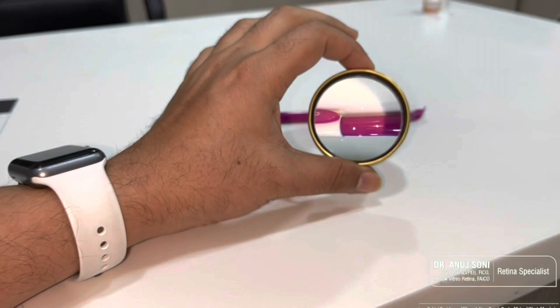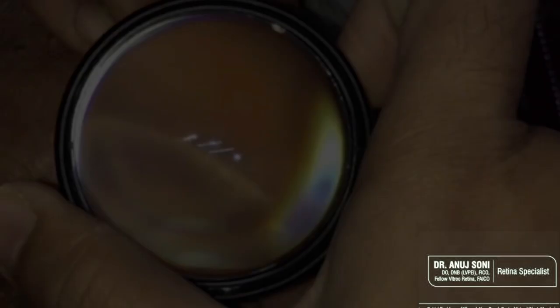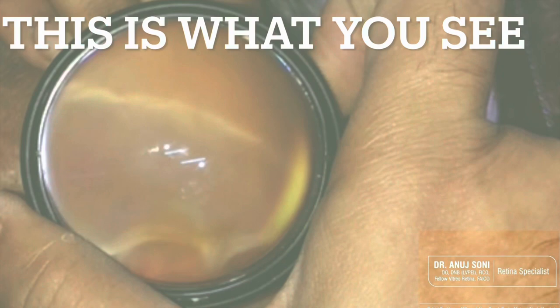We will put this into practice and understand what happens if we see the superior periphery. When the patient looks up, we are examining the superior periphery and this is what we see in our indirect.